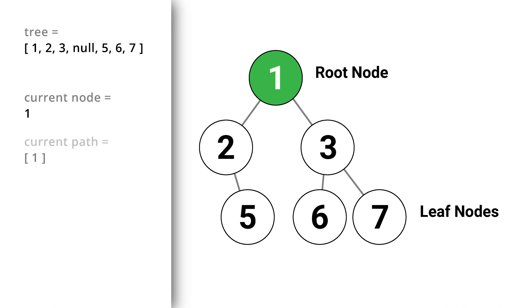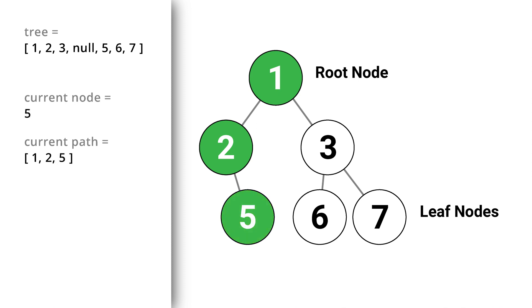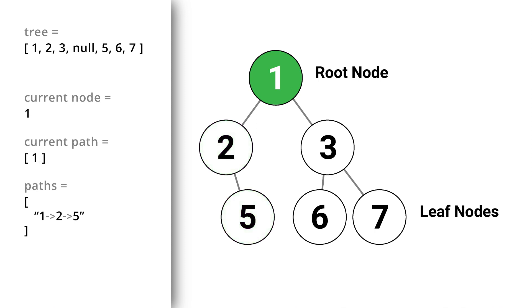To solve this, we will start the traversal from the root node, and during traversal at each node we will record the path we have taken. From this node we check whether it has a left or right node. Since it has a left node, we continue traversal in that path. At the next node we have no left node but do have a right node, so we continue there. At that node we have neither left nor right — we are at a leaf node — so we stop the traversal and store the path to the result.